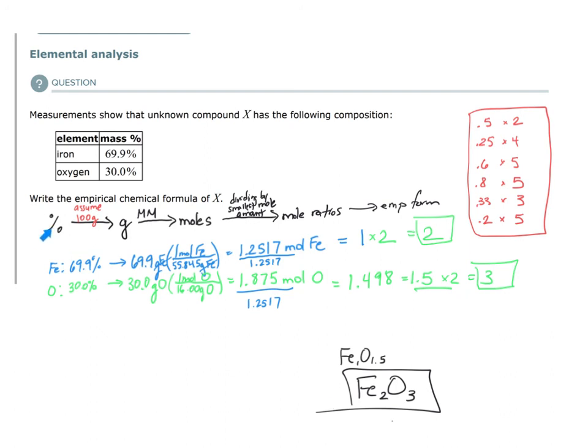If you start with percent by mass, assume 100 grams to get to grams. Use molar mass to convert to moles. Find the smallest mole amount and divide all of the mole amounts by that smallest mole amount to get your mole ratios. If your mole ratio happens to be a decimal, then multiply all of the mole ratios by the necessary multiplier. And then you'll have your empirical formula.